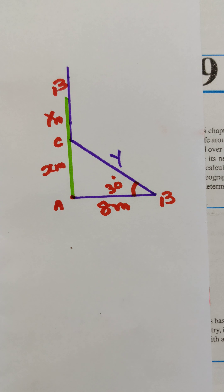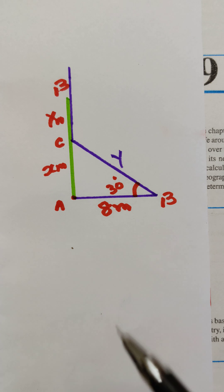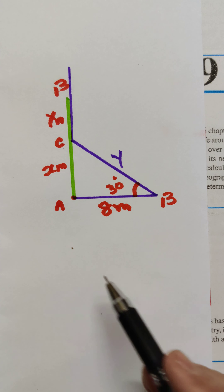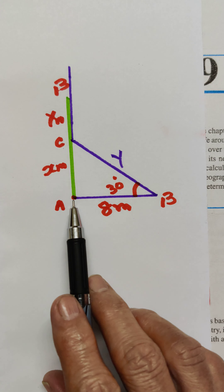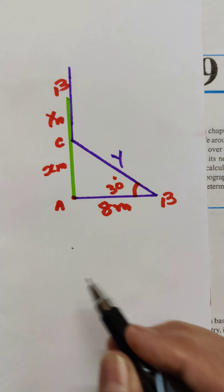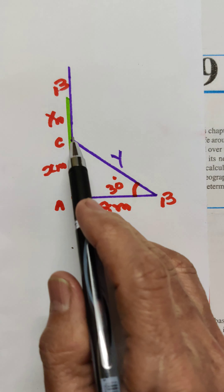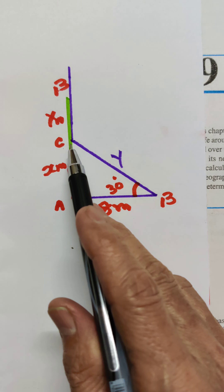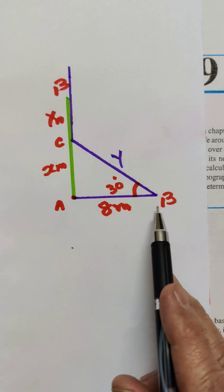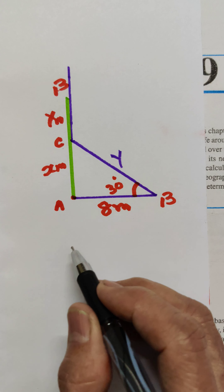Suppose this was the tree — AB was the tree and it is broken due to the strong wind at C. We have to find the height BA. We let the height AC = x and CB = y. The angle is 30 degrees where the broken part BC is touching the ground.